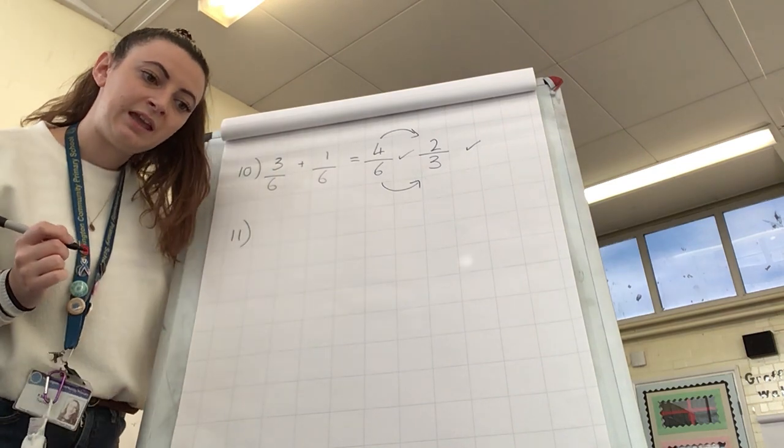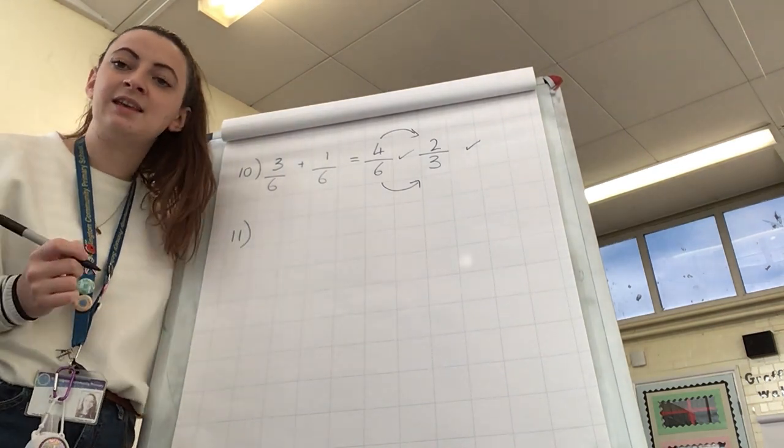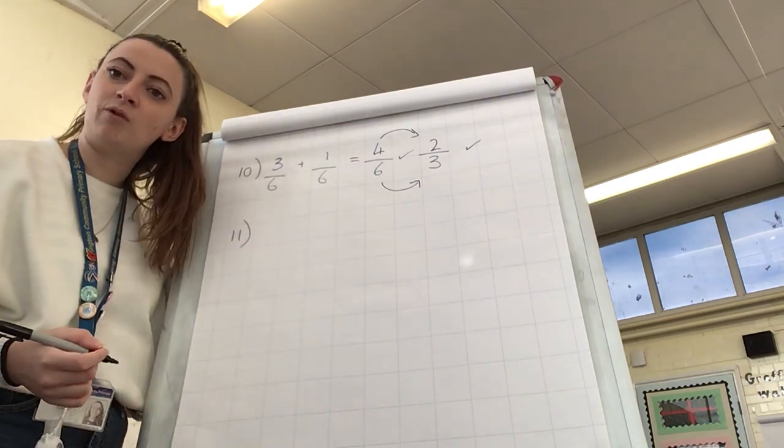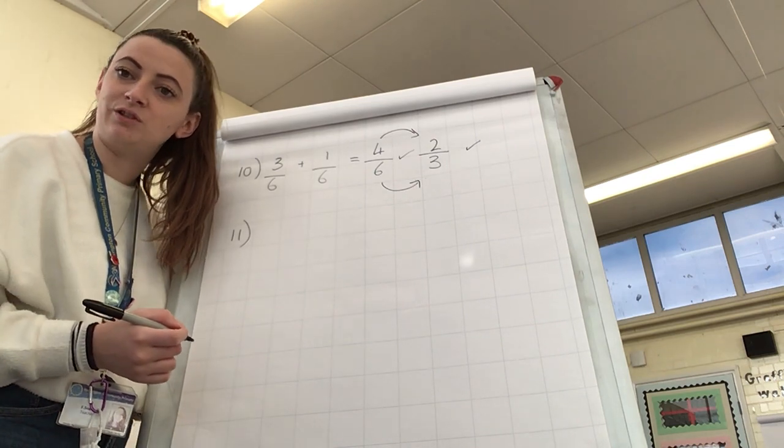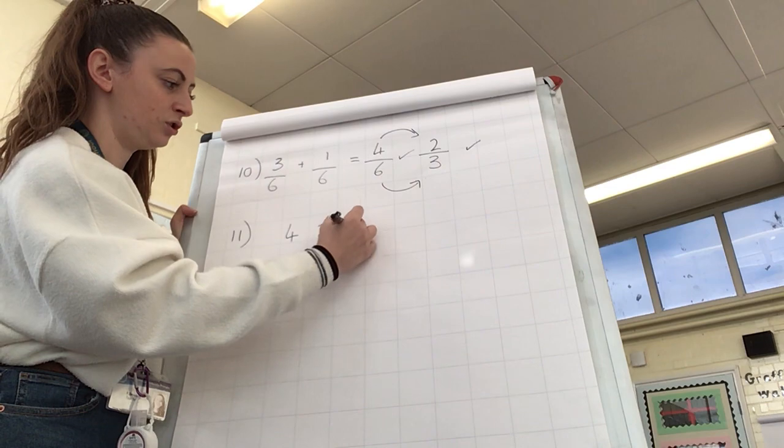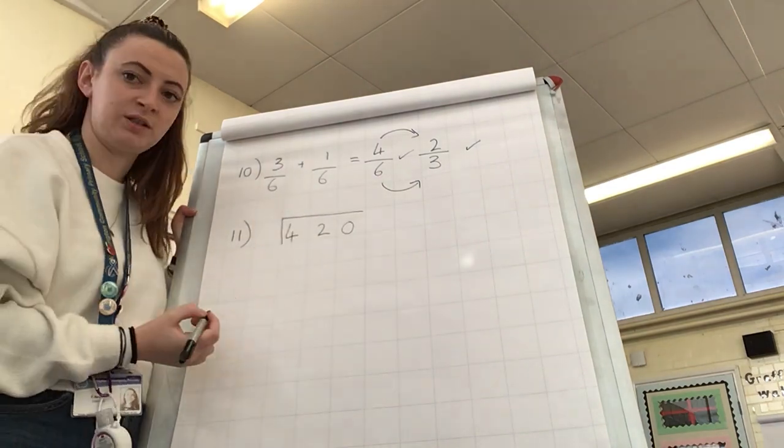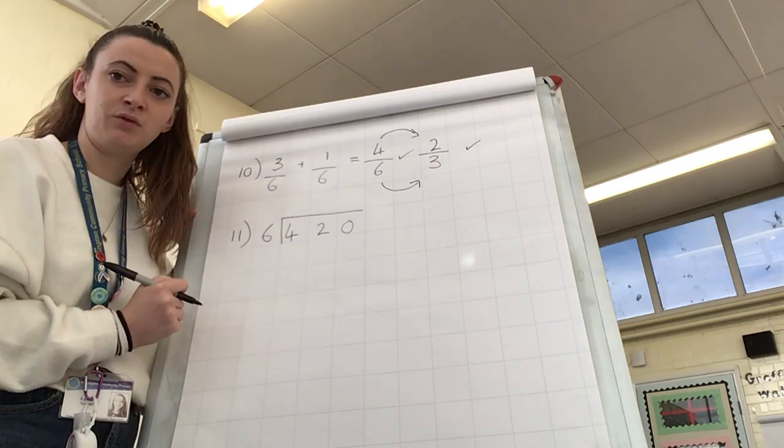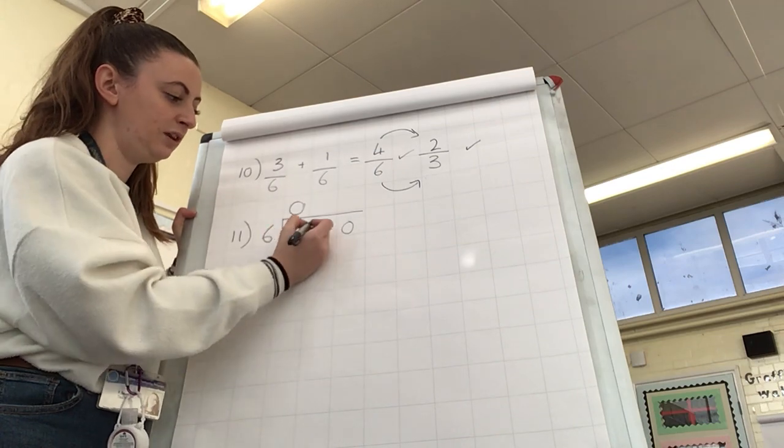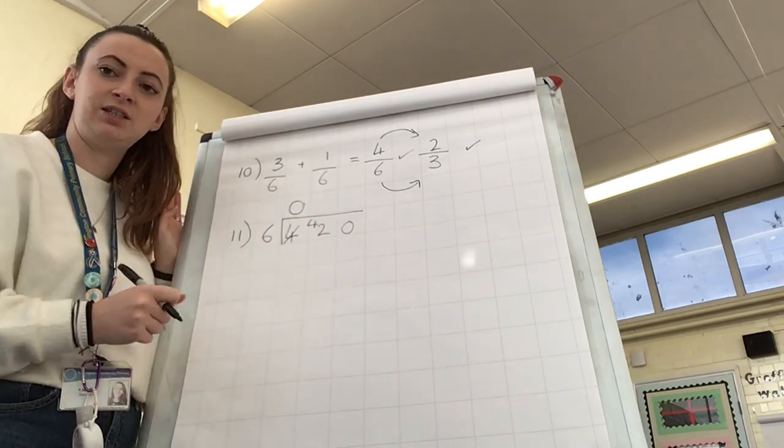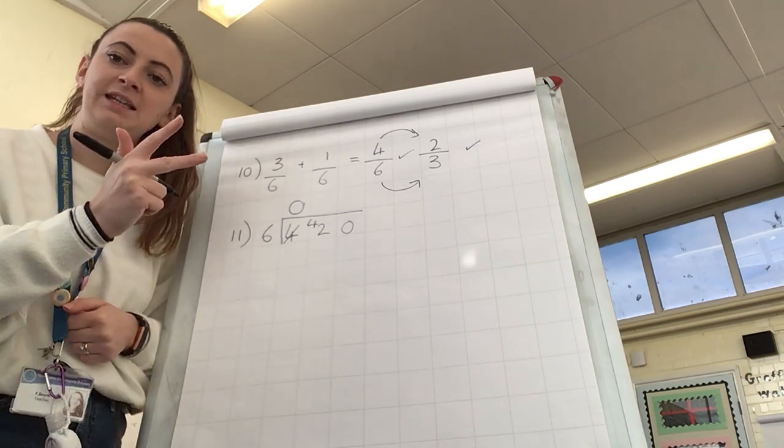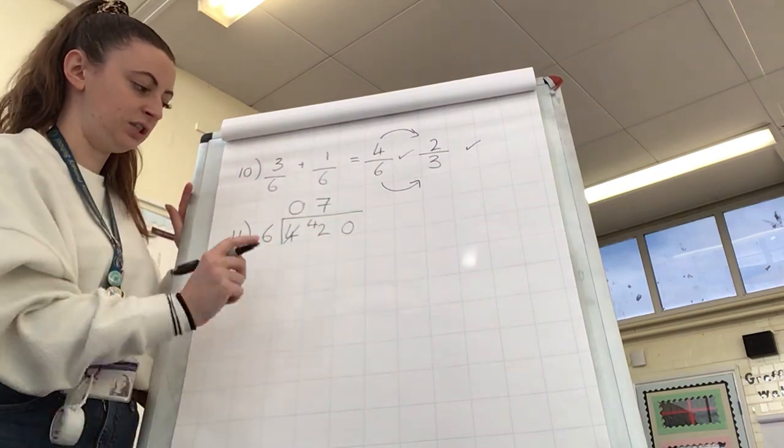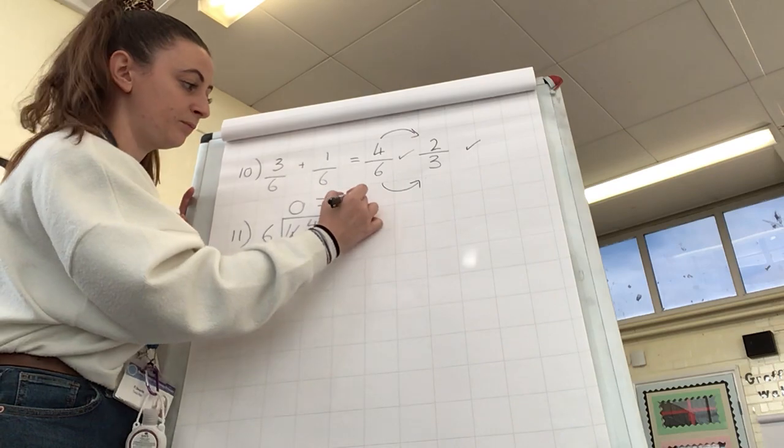Question eleven is four hundred and twenty divided by six. You may have done this in a few different ways. You may have thought, right, we're dividing, and we've got quite a big number there. We've got a three-digit number, so I'm going to use the bus stop method. So, you may have done four hundred and twenty inside your bus stop. You are dividing by six, so six is outside of the bus stop. Six is into four, cannot do. Regroup the four, put it ahead of the two. Six is into forty-two, we've got six, twelve, eighteen, twenty-four, thirty, thirty-six, forty-two. Seven sixes in forty-two. Six is into zero, zero. The answer is seventy.